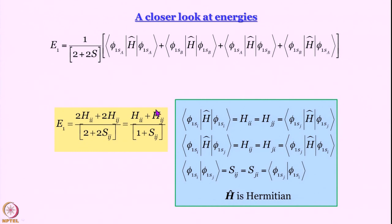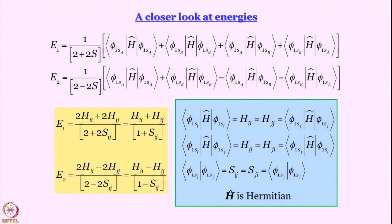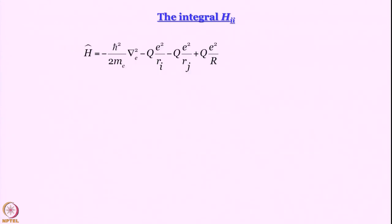For E_2, we get more or less the same expression except that instead of plus signs we get minus signs. Please work it out yourself and satisfy yourself. The next task is to evaluate H_ii and H_ij — to simplify their expressions in terms of things we know. So let us do that by writing down the expression for the Hamiltonian.